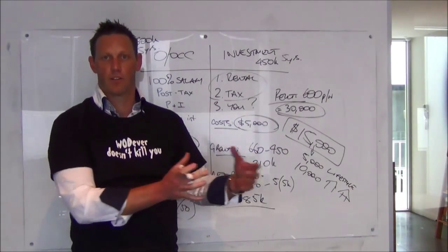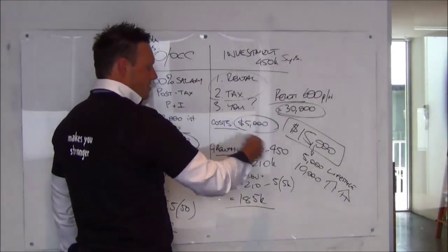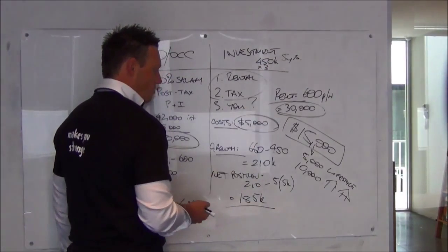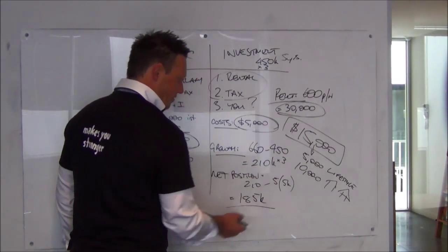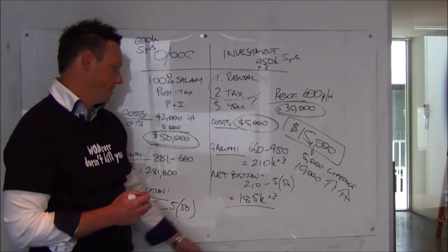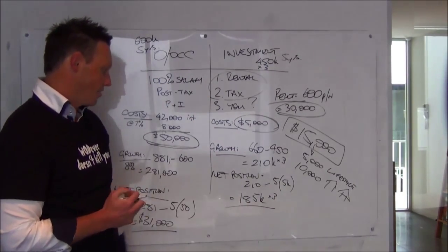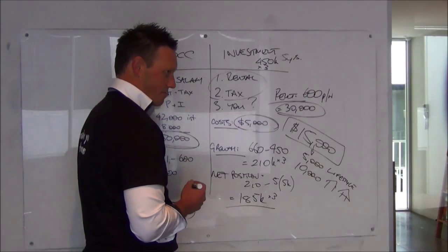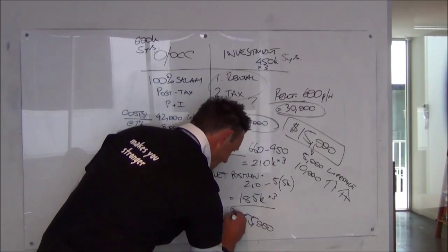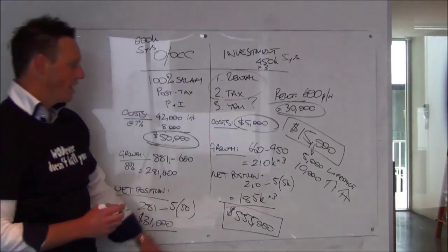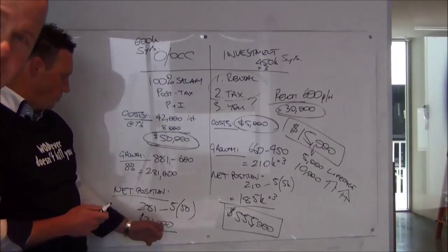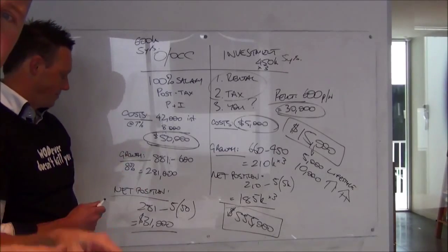This is really where compound growth comes in, guys. So, if that gives a scenario of three properties in total, we have three lots of $450,000. That gives us three lots of $210,000 as the growth, and three lots of $185,000 as the net position. $185,000 times three, $555,000. $555,000 is the net position when you look at a side-by-side comparison, dollar for dollar, out of your pocket. So, if you're saying $31,000 against $555,000.